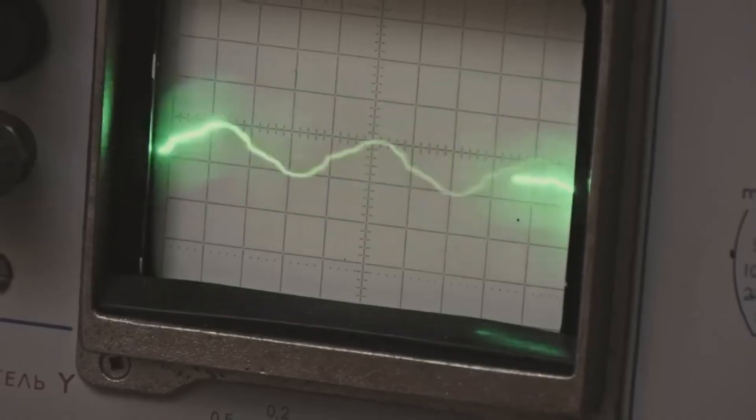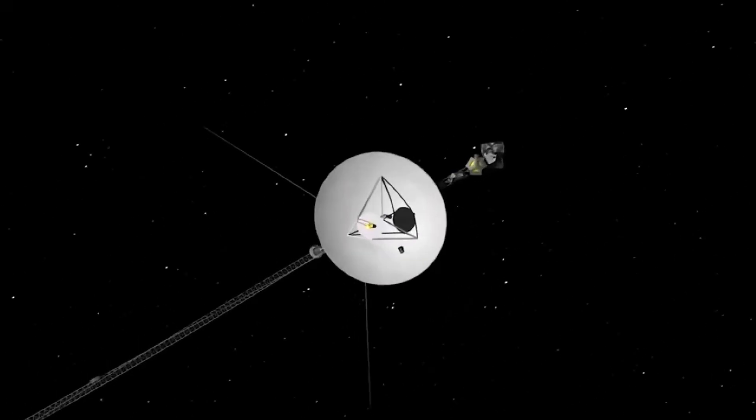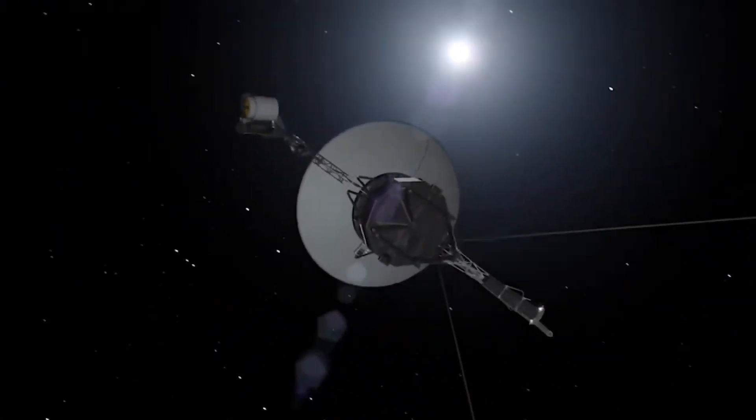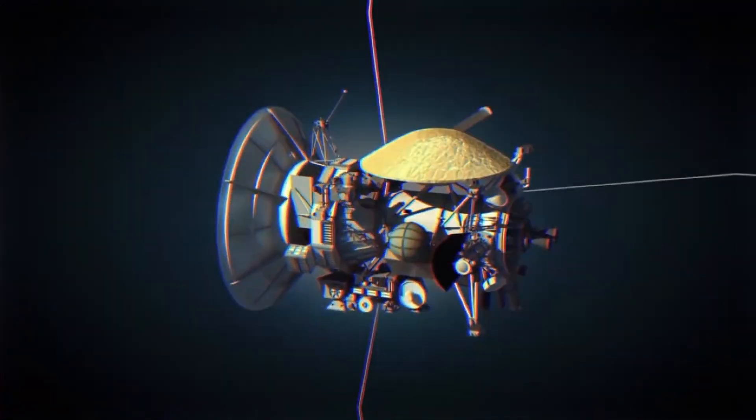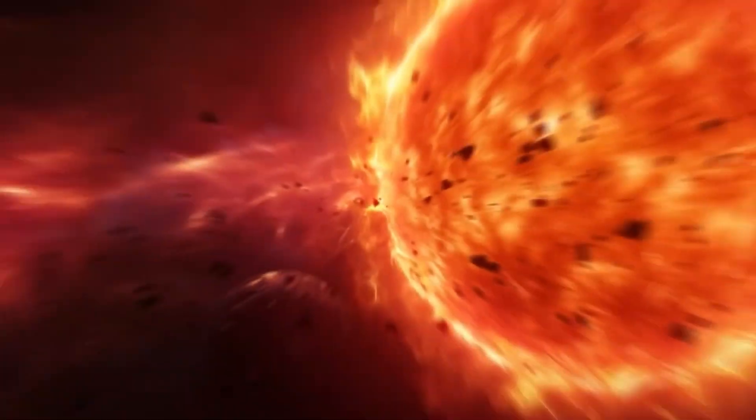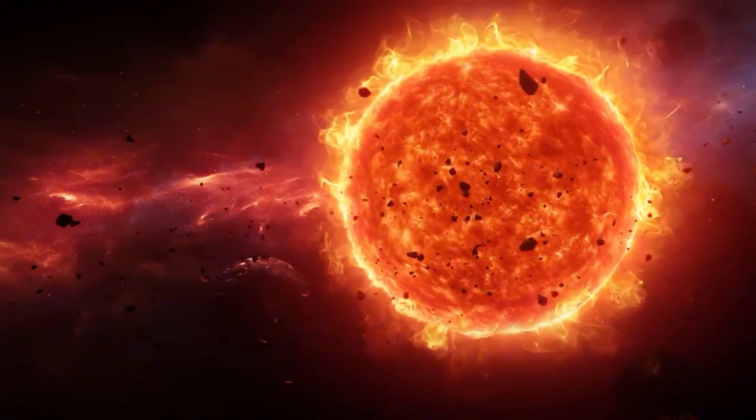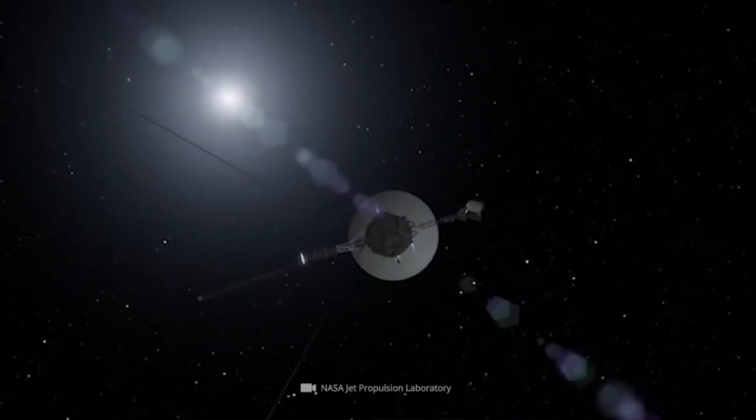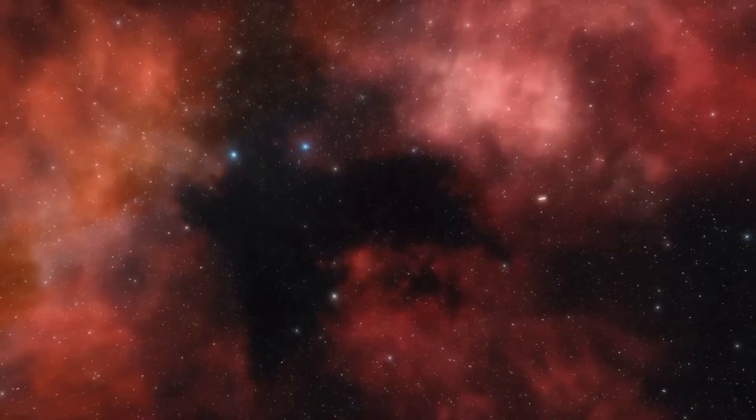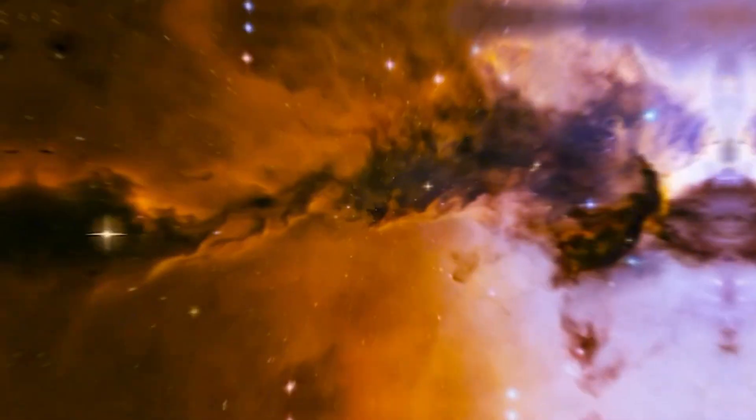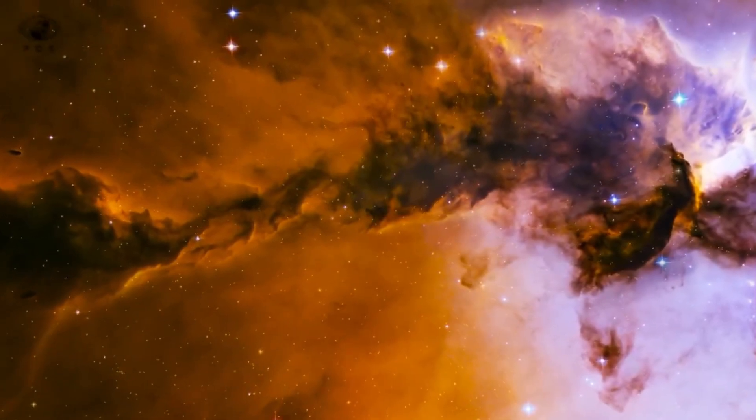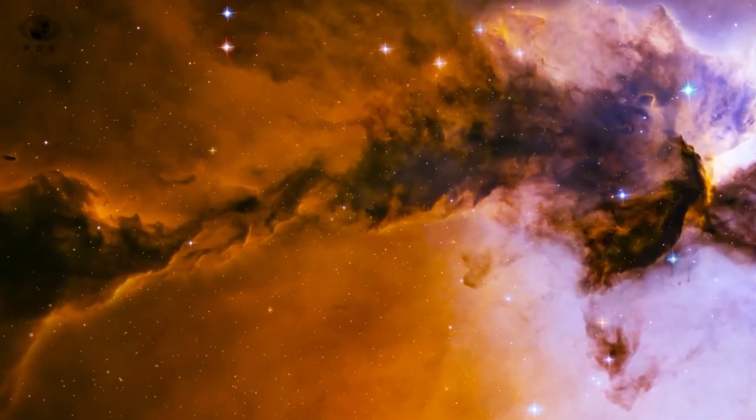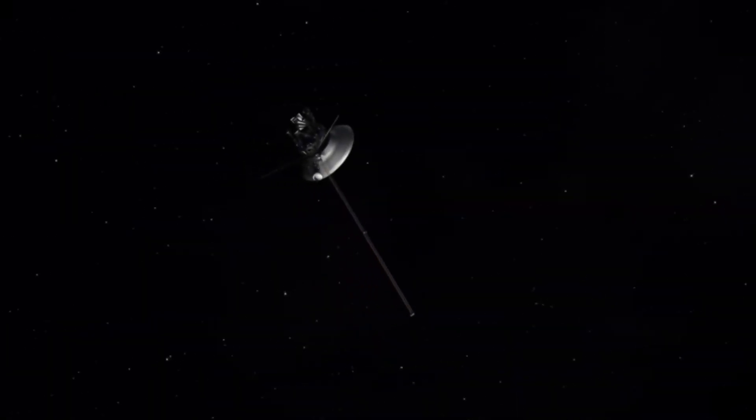But once it completed its planetary mission, Voyager 1 kept going. It passed beyond Pluto's orbit, beyond the heliosphere, and entered interstellar space, a region never before touched by human technology. Year after year, it sent back less data, but remained steadfast in its purpose to keep exploring, even as its systems grew colder and weaker, even as sunlight became more of a memory than a presence.